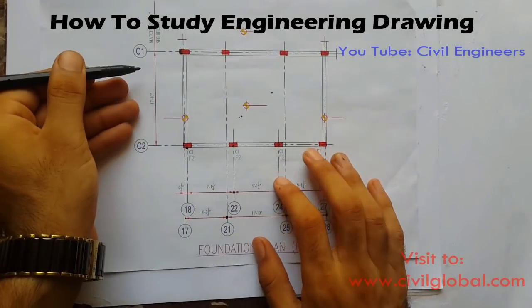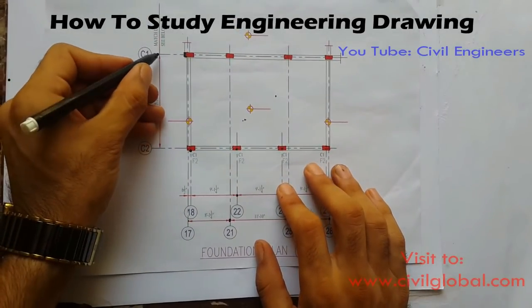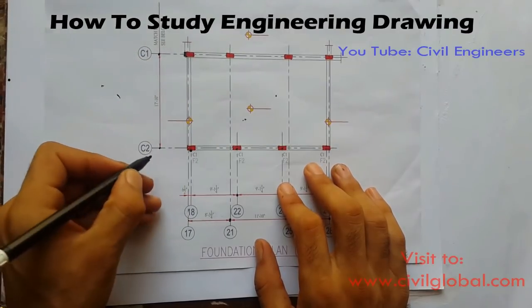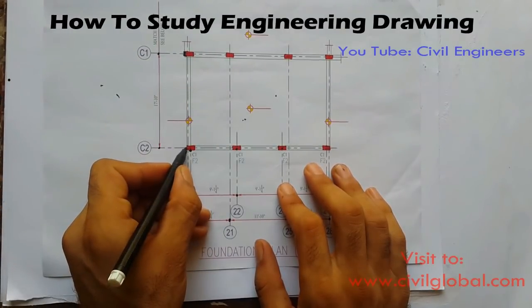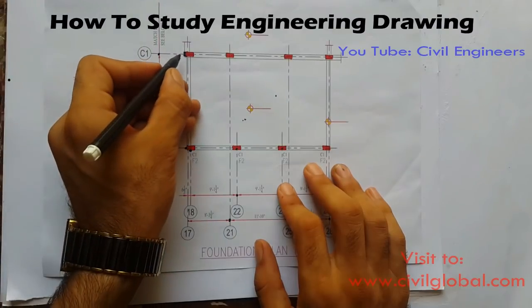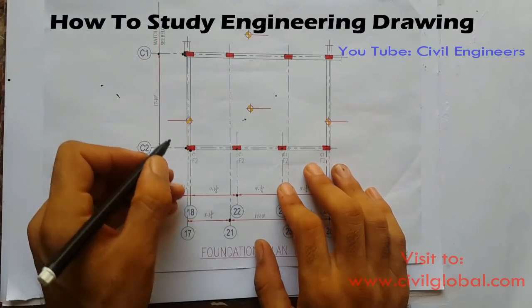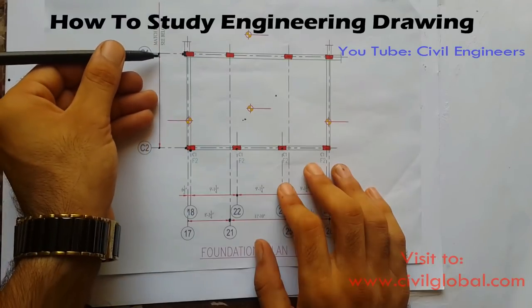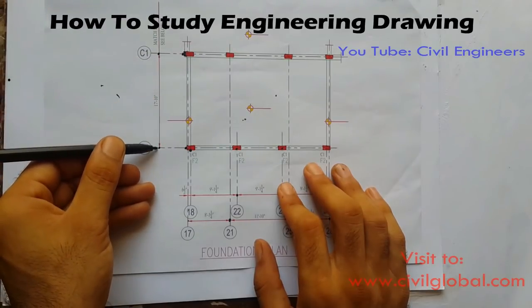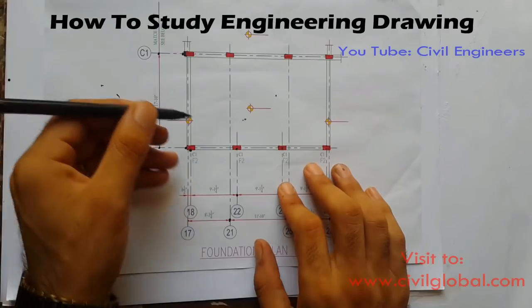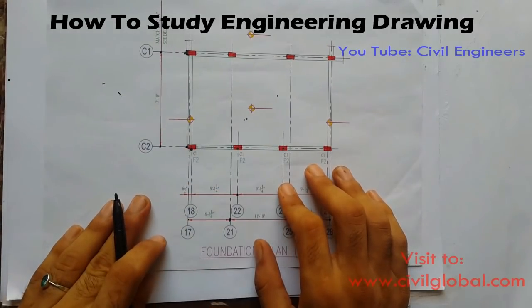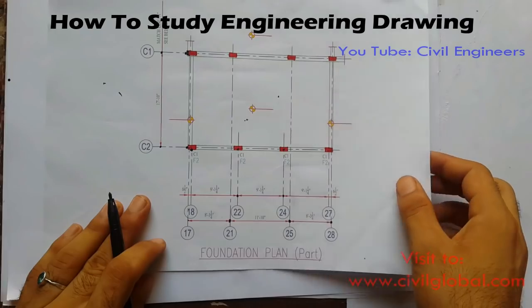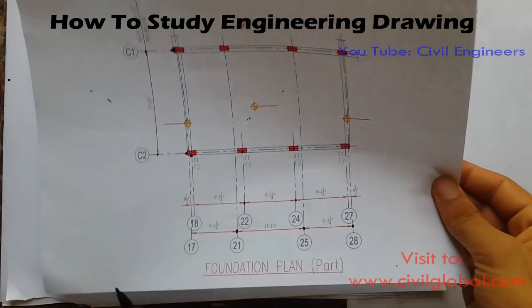Here are the vertical dimensions. This is one grade line and the other grade line — they show one center line for a column and the center for another column. The dimension from here is seventeen feet ten inches. This is the sample way of how to study civil engineering drawing.